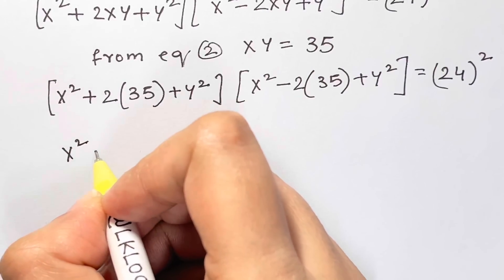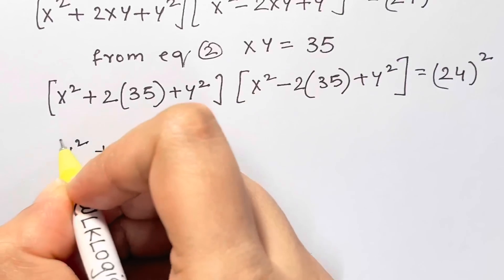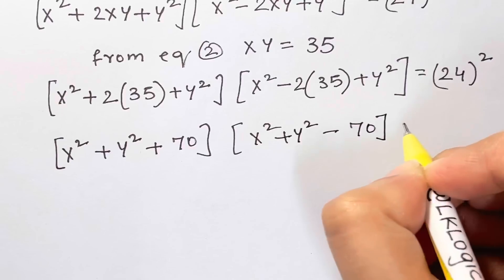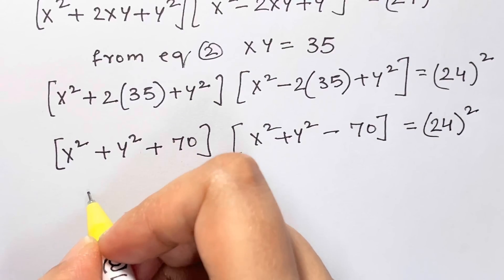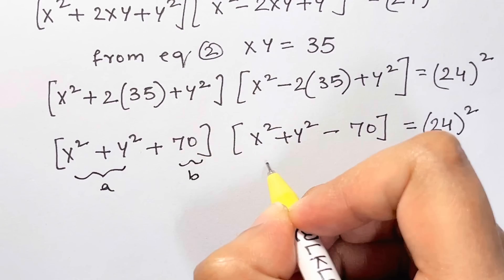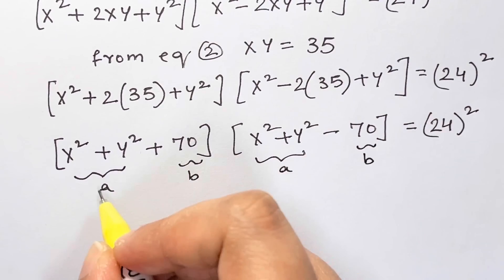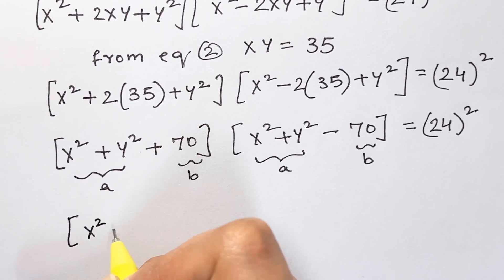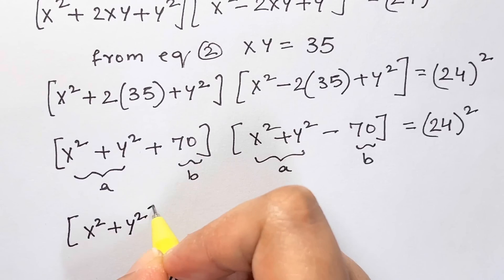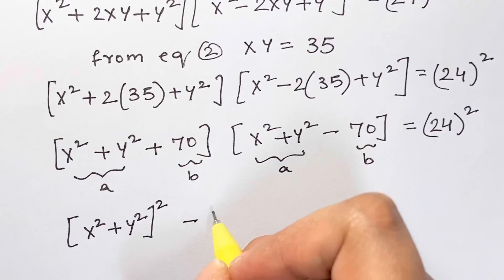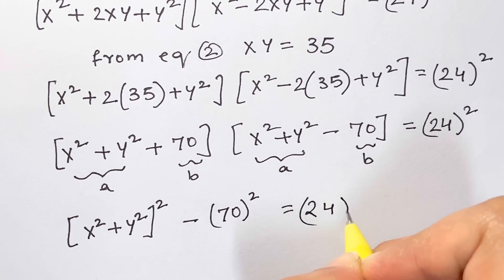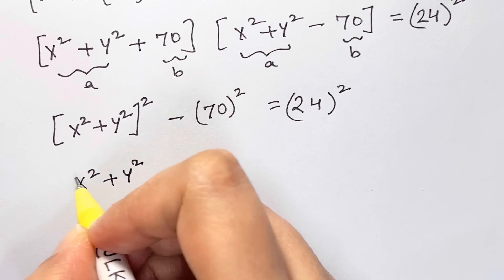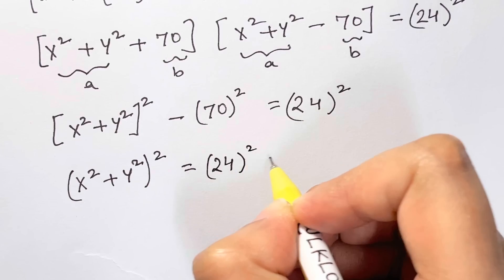Arranging this, I have (x² + y² + 70) times (x² + y² - 70) = 24². As you can see, if I let a = x² + y² and b = 70, I can use the formula a² - b², giving me (x² + y²)² - 70² = 24². Rearranging: (x² + y²)² = 24² + 70².